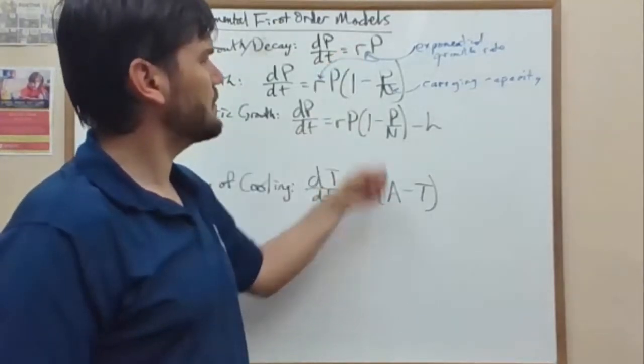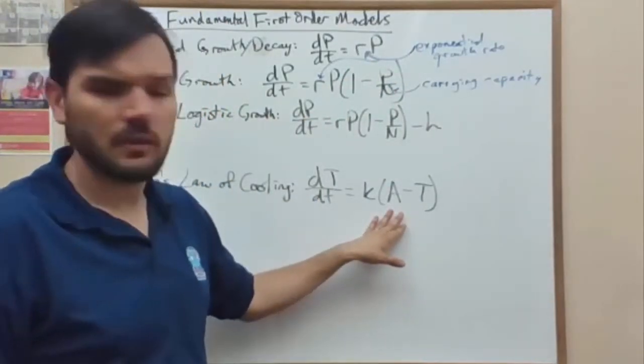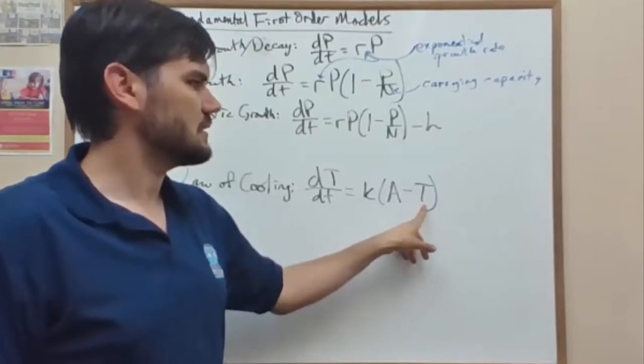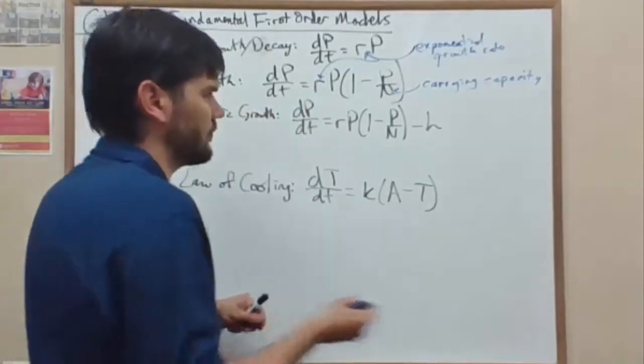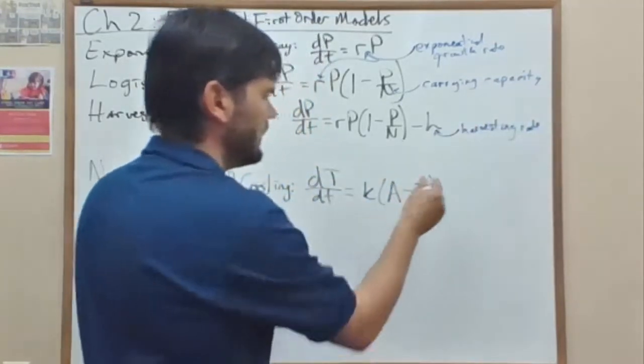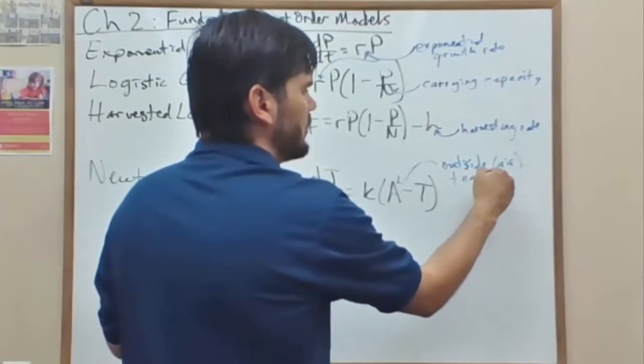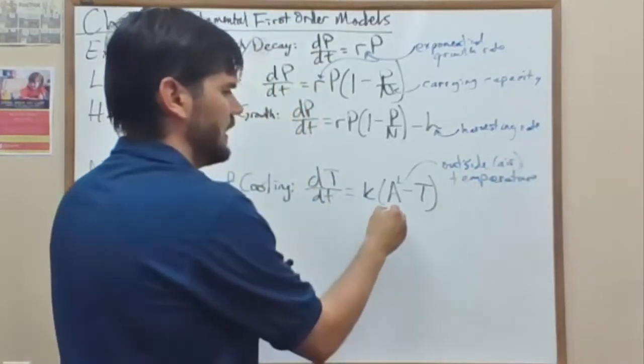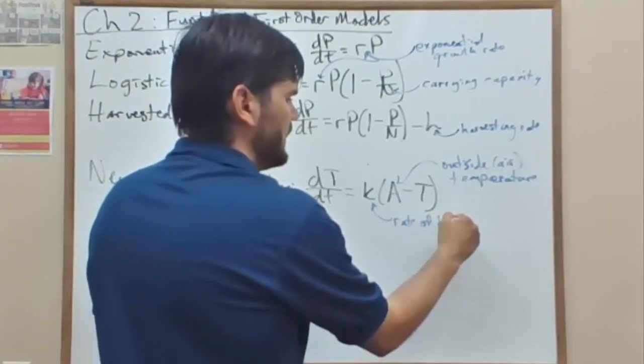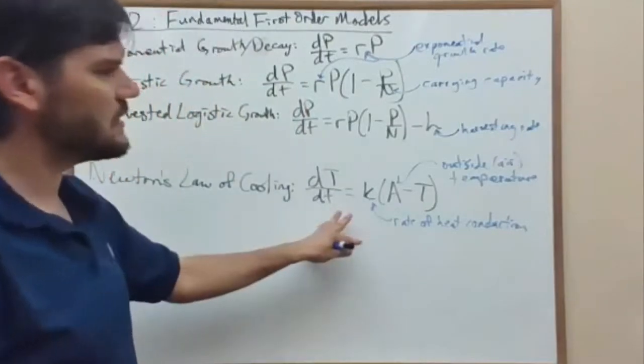Newton's Law of Cooling is very similar mathematically to the exponential growth because it has a linear term, non-quadratic. It can be solved as separable because it's autonomous because a and k are parameters. Or it can be solved as linear because this is just a linear multiple of t and this is a constant. Here we have the outside, usually the air temperature. And on the bottom we have the rate of heat conduction. Thermal conductivity is the term we use for that. So this goes into thermal dynamics.